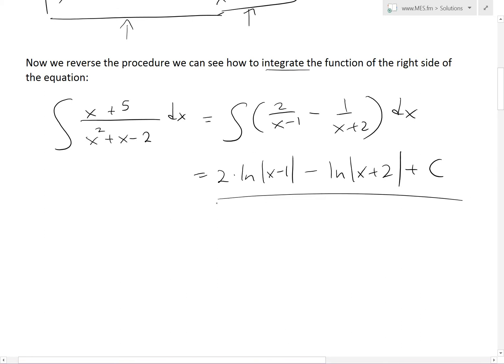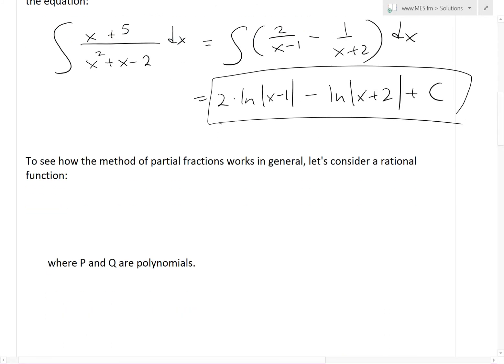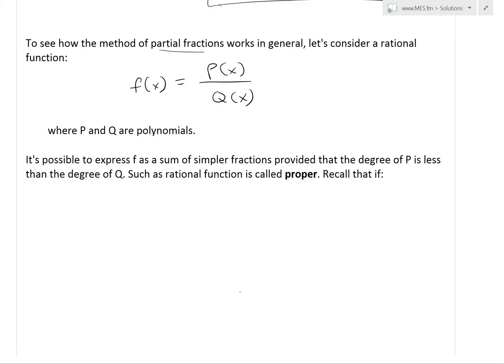So basically doing this method, we could quickly solve or break it down into functions we know and then solve for the integral. To recap on partial fractions, to see how the method of partial fractions works in general, let's consider a rational function f of x equals p of x divided by q of x. Where p and q are just polynomials, so that's just the definition of a rational function. And basically like I showed in my earlier videos on partial fractions, it is possible to express the function f or the rational function f as a sum of simpler fractions provided that the degree of p is less than the degree of q.